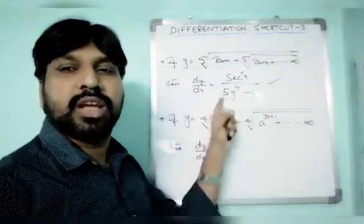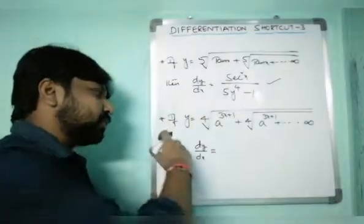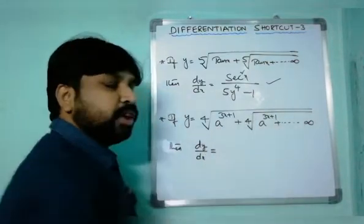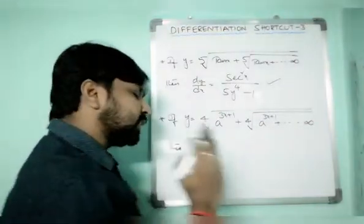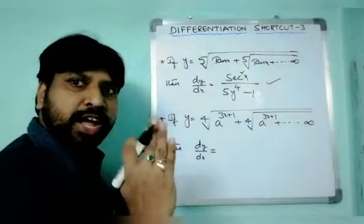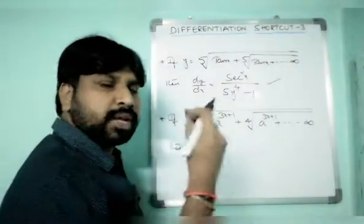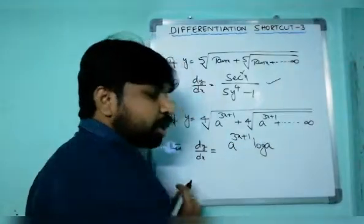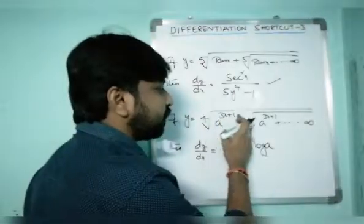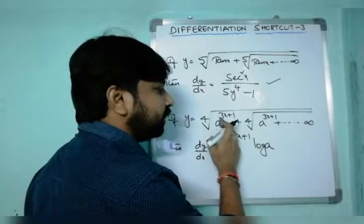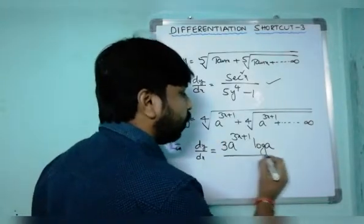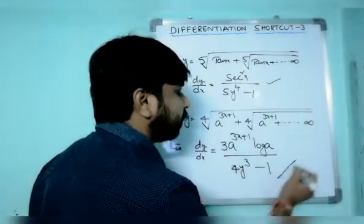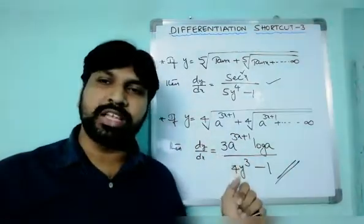Next: if y equals the fourth root of a^(3x+1) plus the fourth root of a^(3x+1) plus so on to infinity, then dy/dx equals what? f(x) is a^(3x+1). Using the chain rule, f'(x) equals a^(3x+1) times log a times 3 (since the derivative of 3x+1 is 3). n is 4 (fourth root). So dy/dx equals 3·a^(3x+1)·log a divided by (4y³ minus 1).